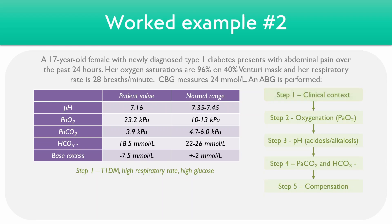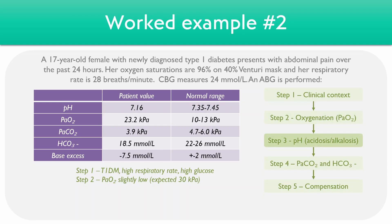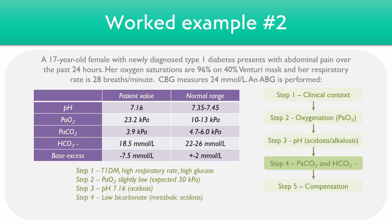For step 2, looking at the PaO2 levels, it's 23.2 kilopascals, which appears above normal range, but remember the patient is on a 40% Venturi mask. We would actually expect the PaO2 to be around 30 kilopascals — 10 less than the inspired oxygen — so it's slightly lower than expected given the oxygen she is on. Moving on to step 3, taking a look at the pH, it's 7.16, which is quite acidotic. Moving on to step 4, the CO2 is low, so it's not a respiratory acidosis, but the bicarbonate is also low, so it's more likely to be a metabolic acidosis.